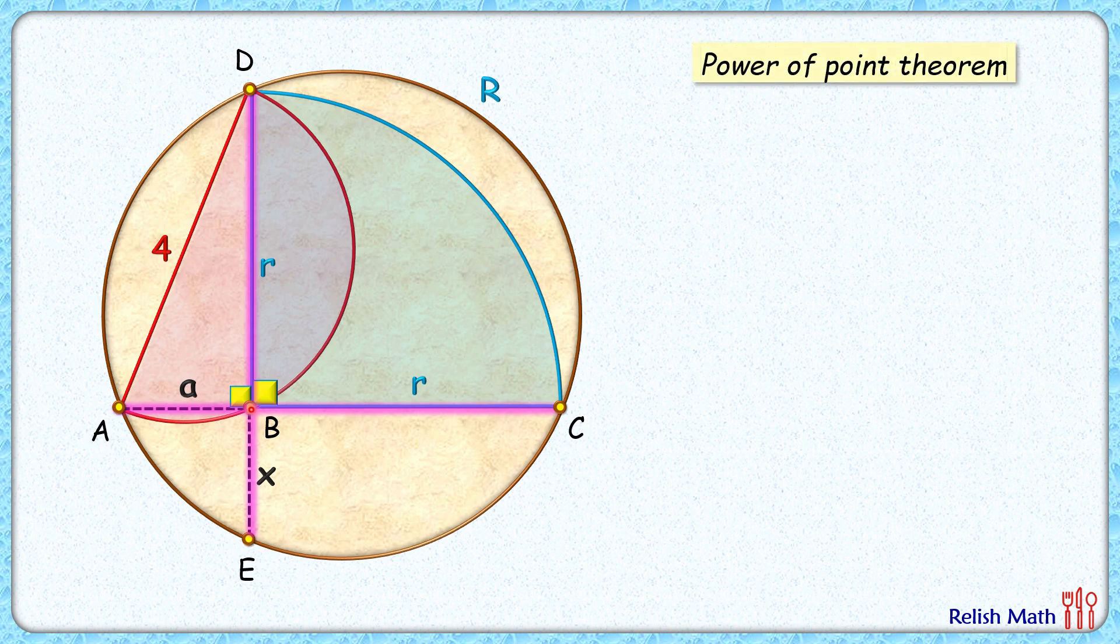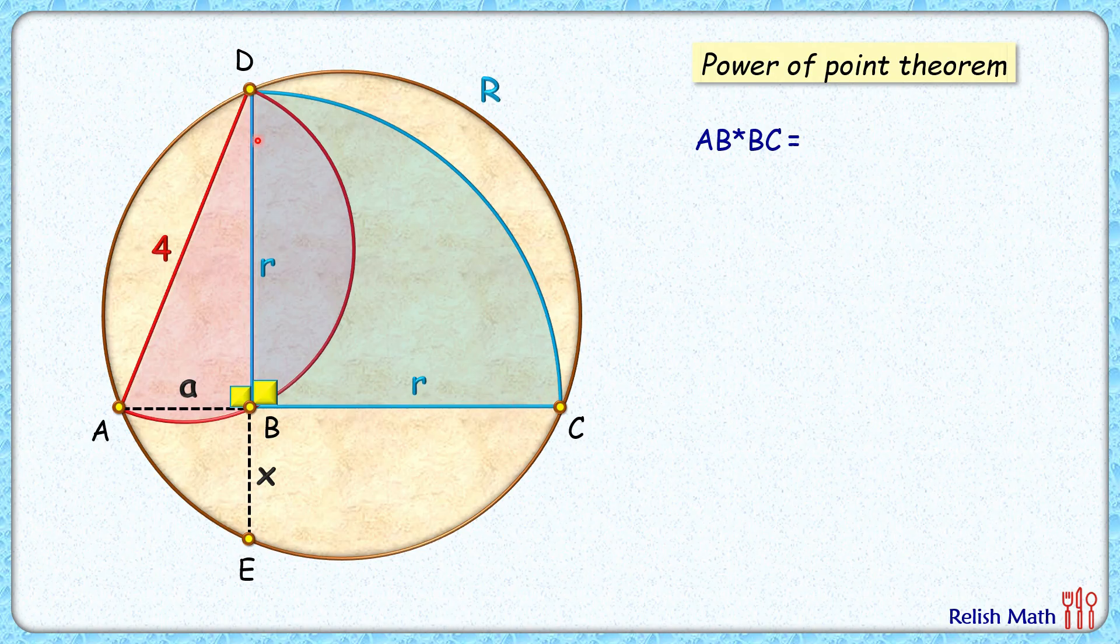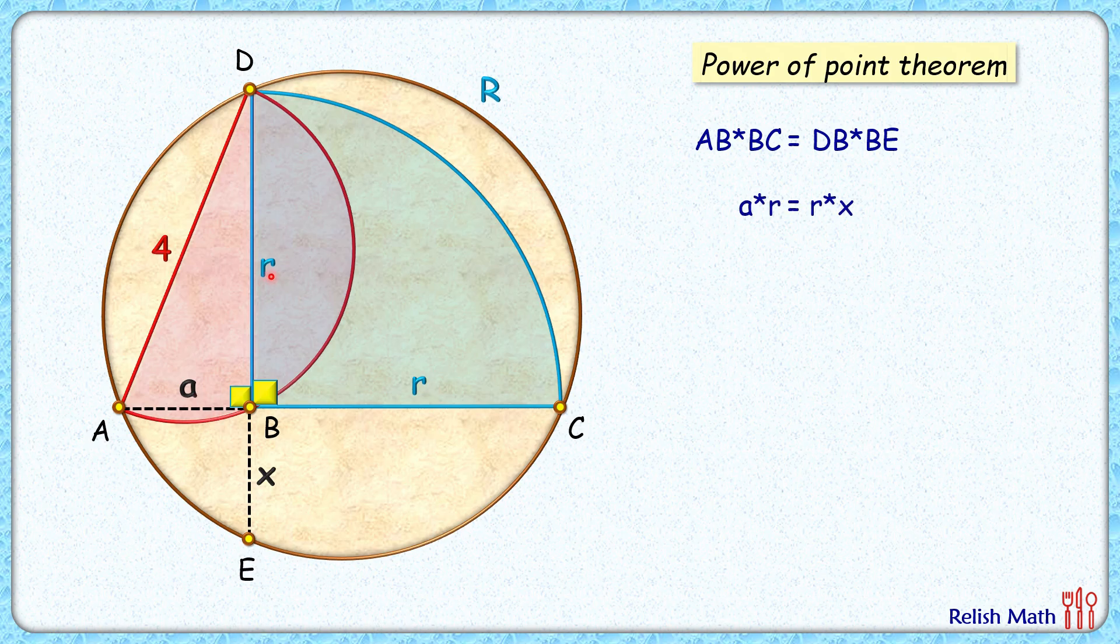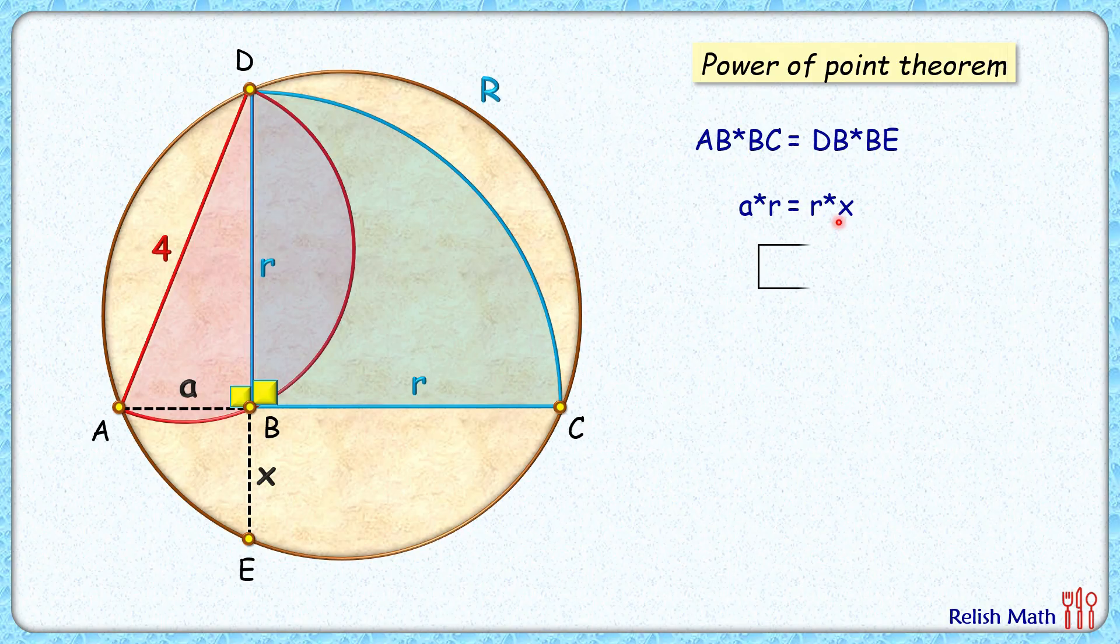Applying power of point theorem, we get AB times BC is DB times BE. Putting the values, we get a times R is r times x. Simplifying, we get x as a centimeters.